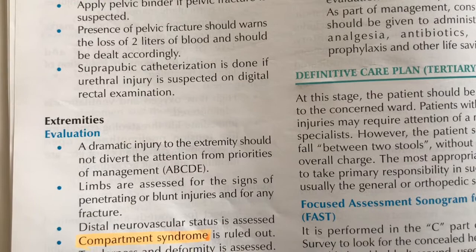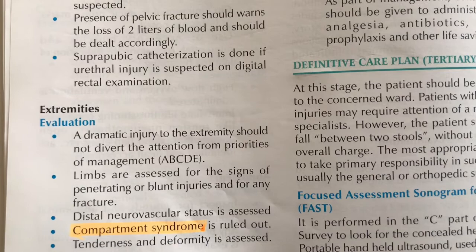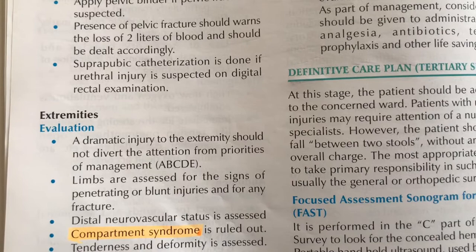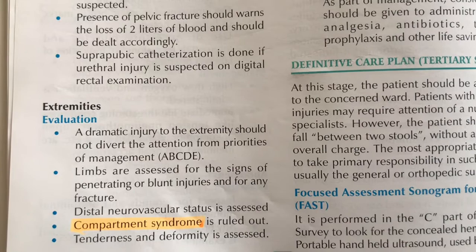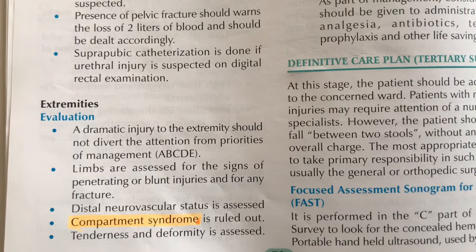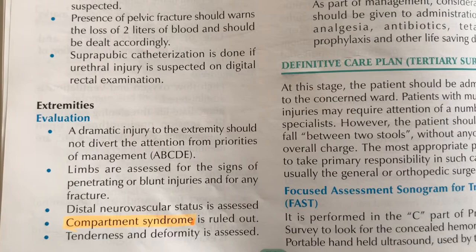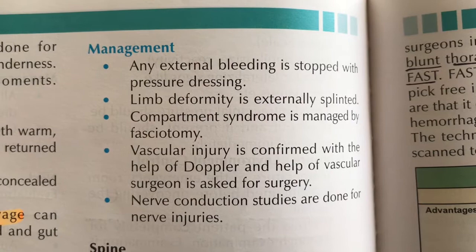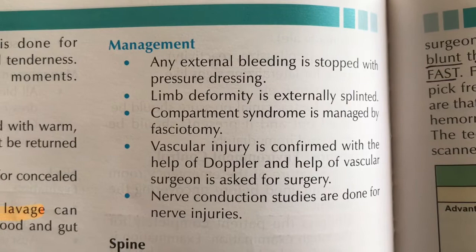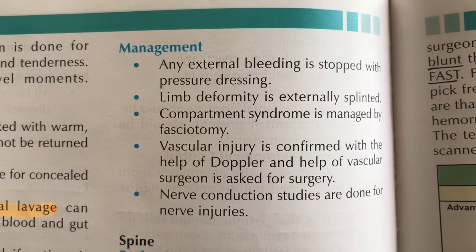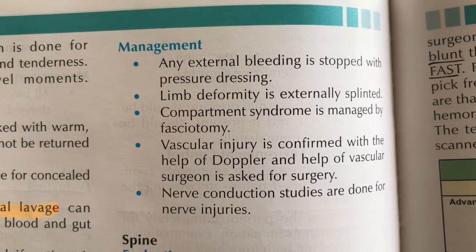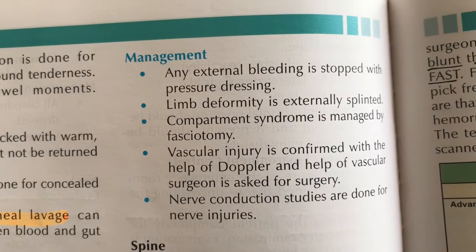Extremities are assessed for signs of penetrating or blunt injuries and fractures. Distal neurovascular status is assessed and compartment syndrome is ruled out. External bleeding is stopped with pressure dressing. Limb deformity is managed with external splinting. Compartment syndrome is treated by fasciotomy. Vascular injury is confirmed with Doppler and vascular surgeon consultation. Nerve conduction studies are performed for nerve injuries.